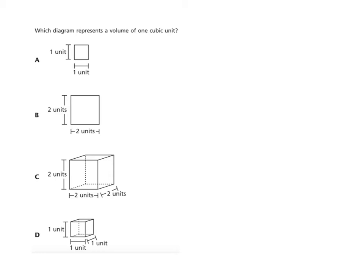Which diagram represents the volume of one cubic unit? The key word here is volume. When we talk about volume, we're talking about length times width times height — three dimensions. So we need a unit times a unit times a unit. If it's one cubic unit, that would be one times one times one. I could also just express those as one unit times one unit times one unit.